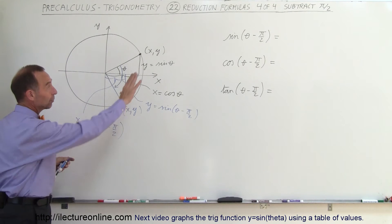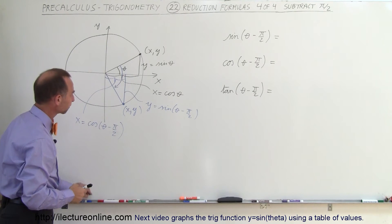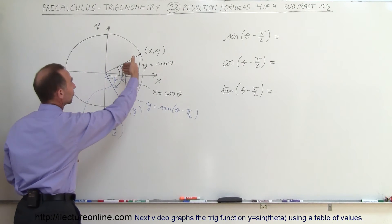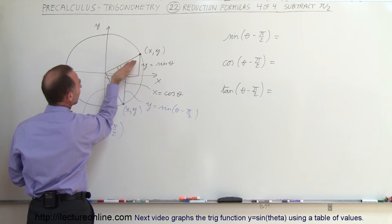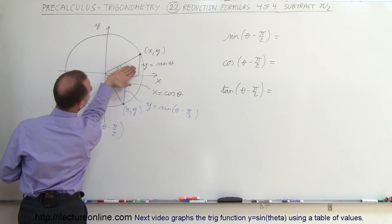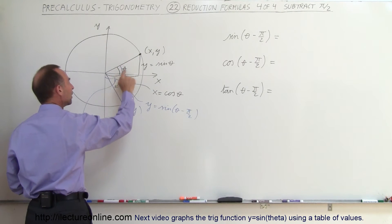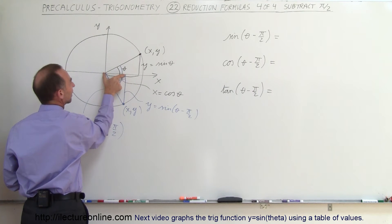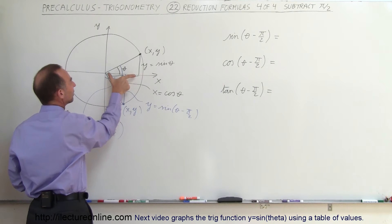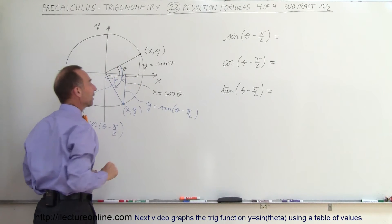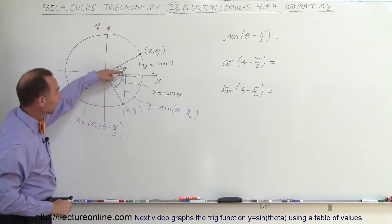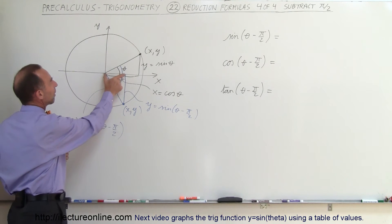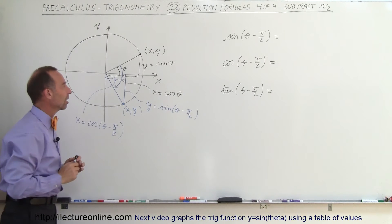Now, how does that relate to what we have on the board? These two triangles are exactly the same. If we take this triangle and flip it over, we get the other triangle, which means the corresponding side lengths are equal in magnitude. Notice that below the x-axis this is a negative value, but the other value is positive — so that's positive and that's positive, so it doesn't have to change.